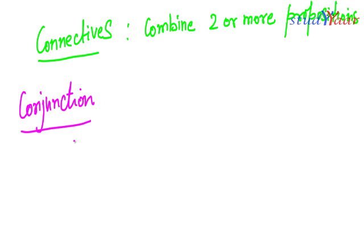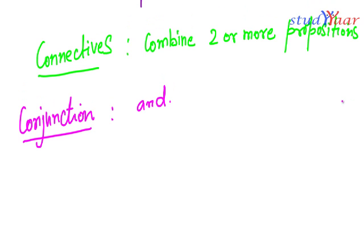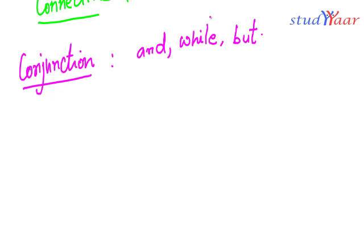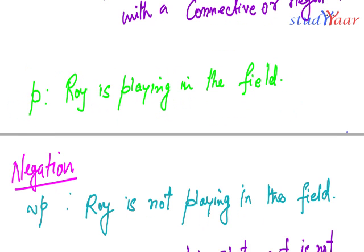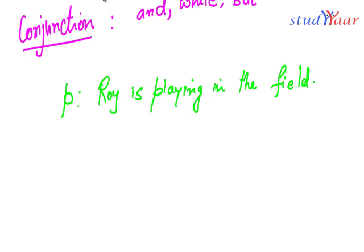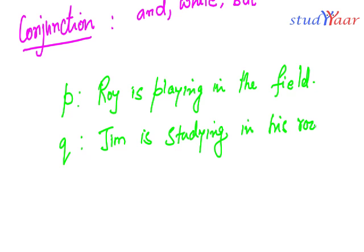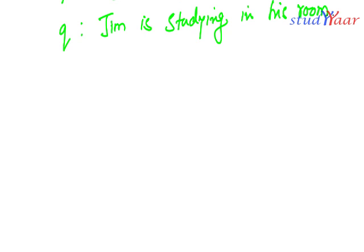Conjunction is also known as 'and' — it is similar to the concept of 'and' in normal English, and also quite similar to 'while' and 'but.' I already have proposition P: 'Roy is playing in the field.' Let us have one more proposition Q, which says 'Jim is studying in his room.'